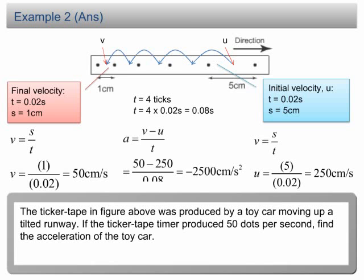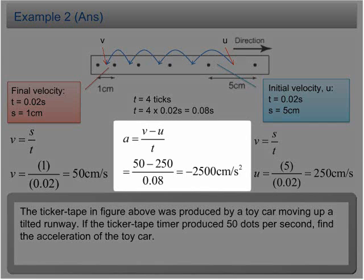Substituting the values of u, v, and t into the equation, the acceleration a = -2500 cm/s². The negative sign suggests that this is a deceleration.